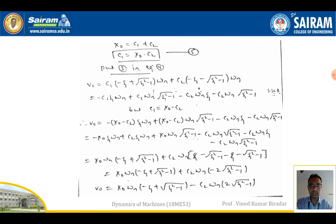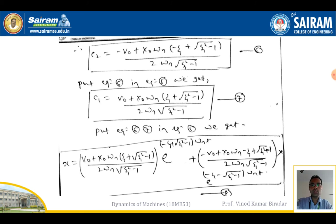Therefore: v₀ = x₀·ωn·(−ζ + √(ζ²−1)) − C2·ωn·2√(ζ²−1). Solving for C2 gives equation 6: C2 = [−v₀ + x₀·ωn·(−ζ + √(ζ²−1))] / [2·ωn·√(ζ²−1)]. This is the C2 value obtained by applying the initial boundary conditions.